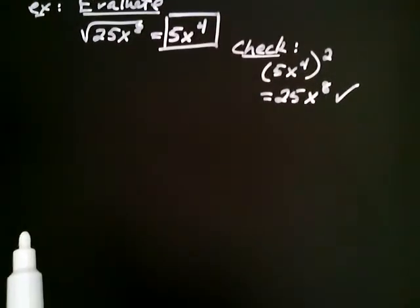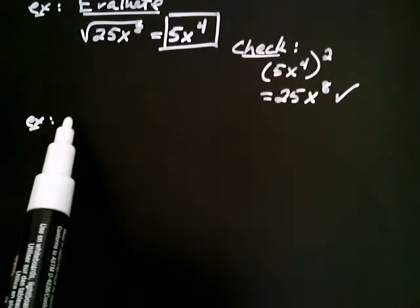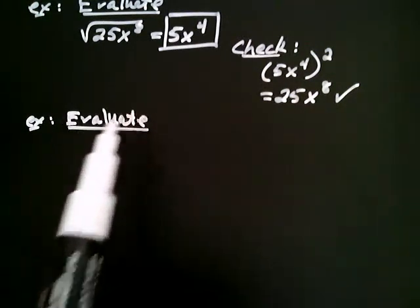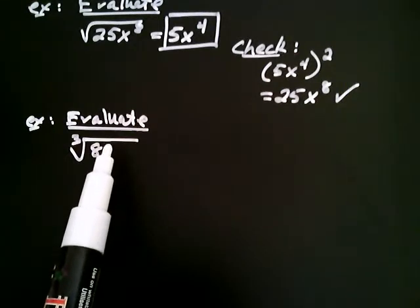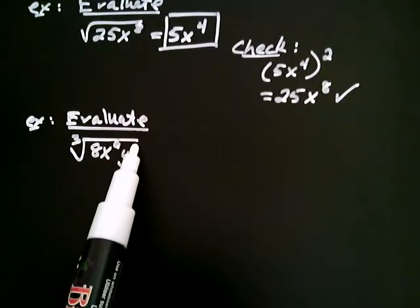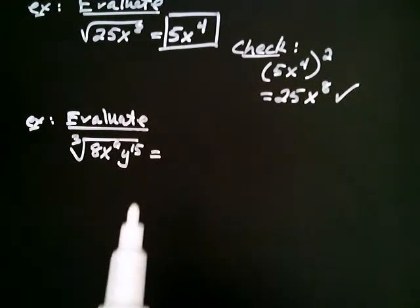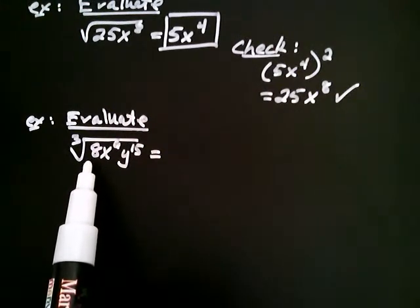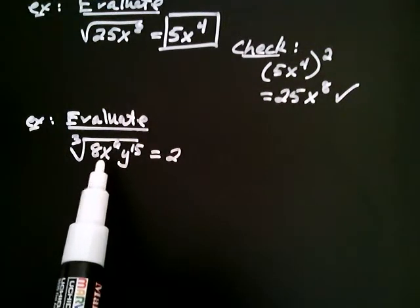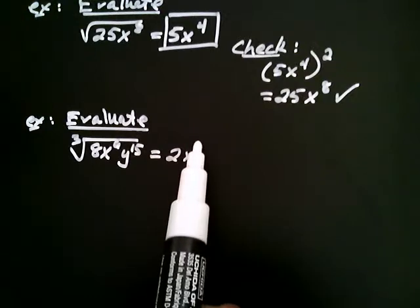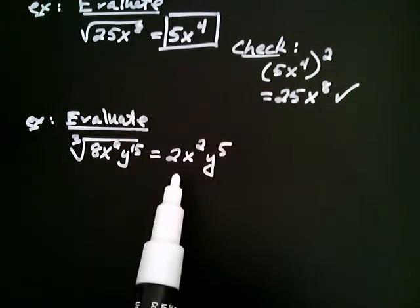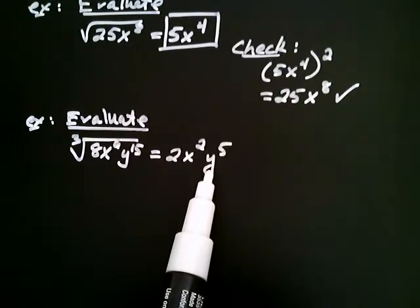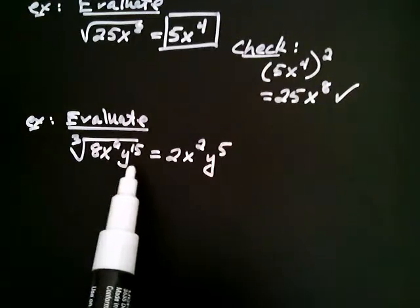Let's take another one. Evaluate the cube root — where the index is three — of 8x to the sixth, y to the fifteenth. The cube root of 8 is a coefficient, so it's truly taking a cube root, and the cube root of eight is two. For the exponents it's division: six divided by three is two, so it's x squared; and 15 divided by three is five, so it's y to the fifth. You can check this by cubing the expression and you'll find you get 8x to the sixth y to the fifteenth.